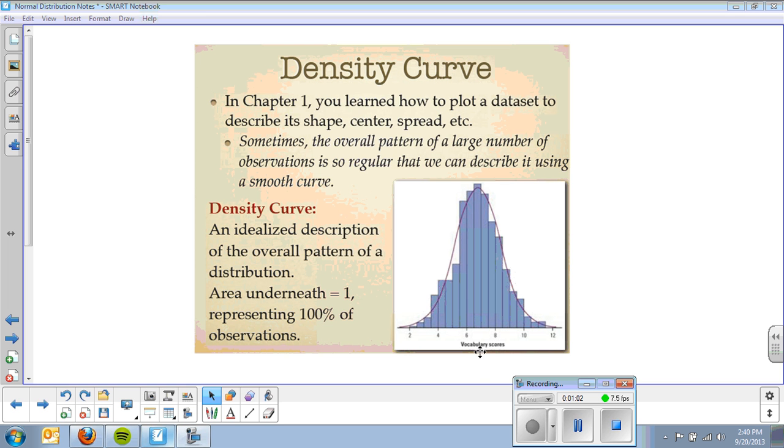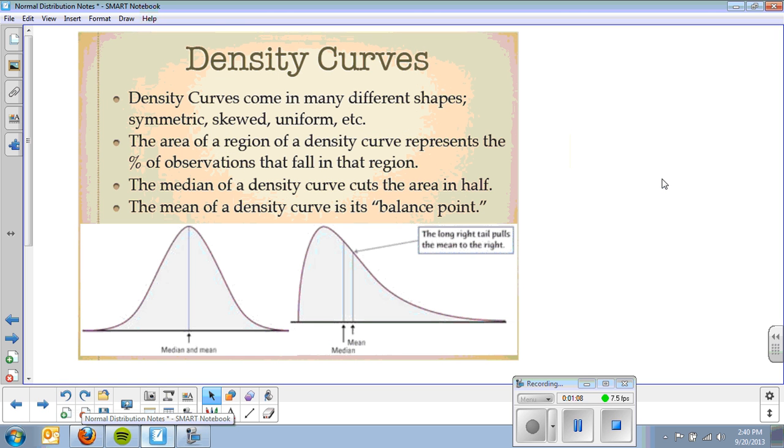Density curves come in different sizes and shapes: symmetric, skewed right, skewed left, et cetera. We're going to be talking a lot about percentages and area under the curve. The mean and median are the same if it's symmetric, and the mean is always skewed towards the tail. Most of the distributions we deal with in this chapter are going to be approximately symmetric or roughly symmetric.